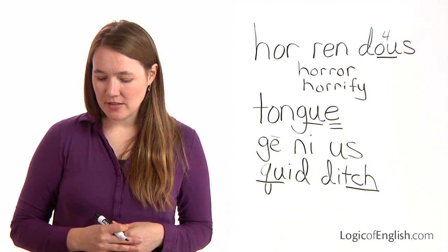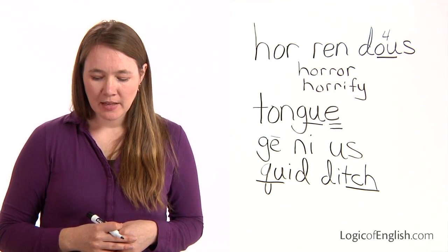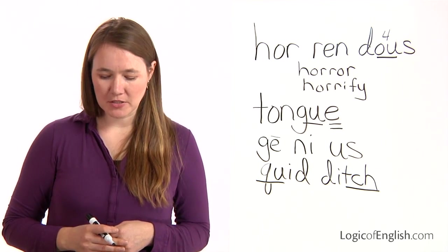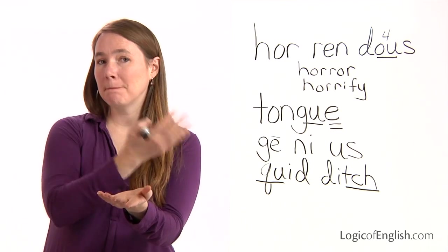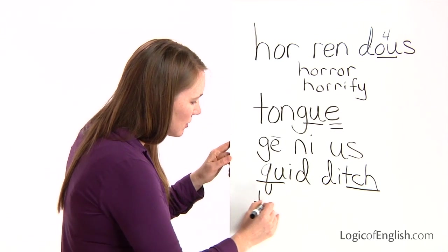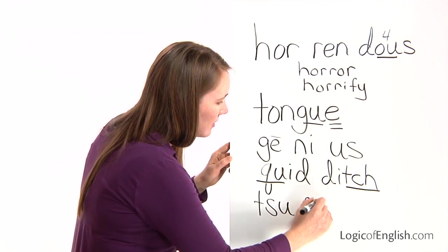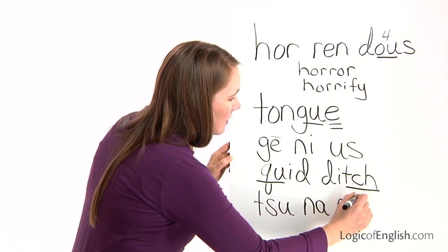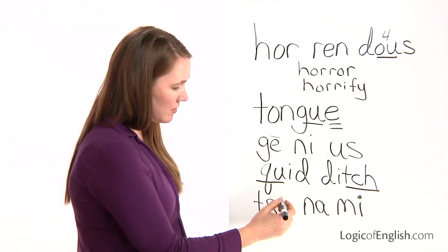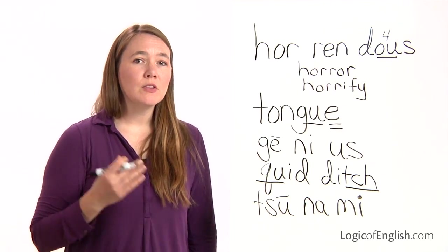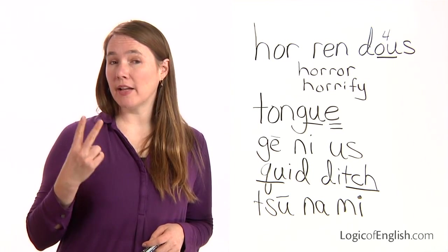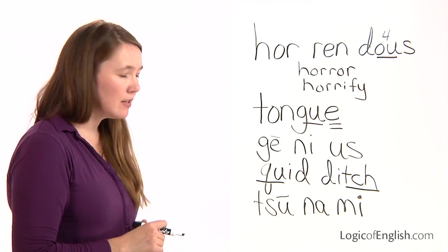The last word is tsunami, and it was submitted by Ryan. I really thought this was an interesting word. Let's sound out how many syllables: tsu, na, me — three syllables. Sound it out with me: TSU, then NA, and then ME. We have the U saying its long sound at the end of the syllable. U has two long sounds — oo and u — and they're both variations of the long sound. Then we have 'na,' where the A is saying its broad sound.